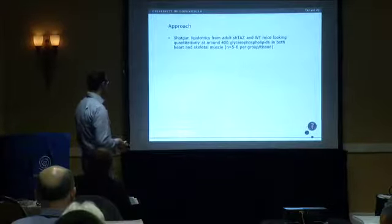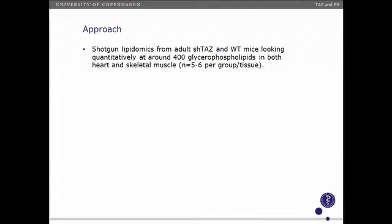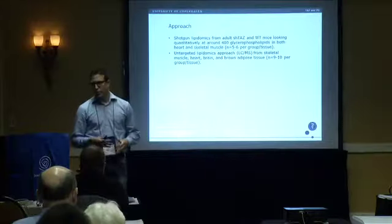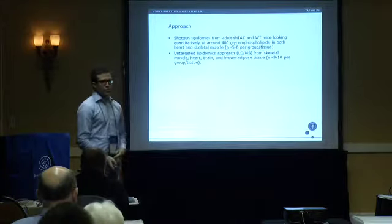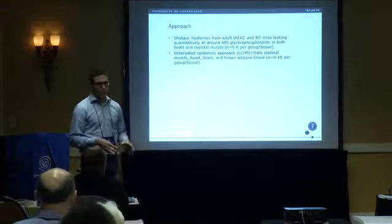Our approach was shotgun lipidomics from adult tafazin knockdown and wild-type mice. We can look quantitatively at about 400 glycerophospholipids simultaneously, done in collaboration with Ruth Welty's group at Kansas State. We used five or six mice per group per tissue, then intersected data sets to reduce noise and identify lipids changing in the same direction in both tissues. We also used an untargeted LC-MS-based lipidomics approach with XCMS from Scripps. My student Michelle Garecki has a poster on this; the positive control — monolysocardiolipin increases — confirms the method is sound.